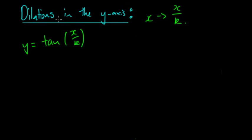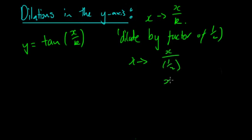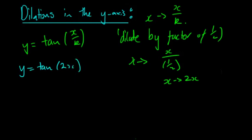Let's say we want to dilate in the y-axis by a factor of a half. This means we're replacing x with x/(1/2), which means we're replacing x with 2x. So this gives us the equation y = tan(2x).